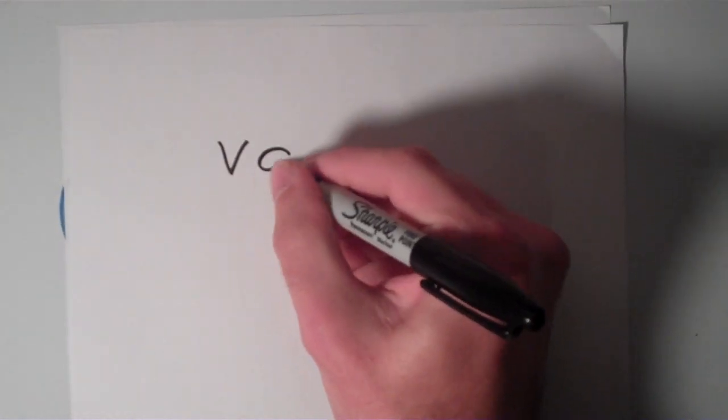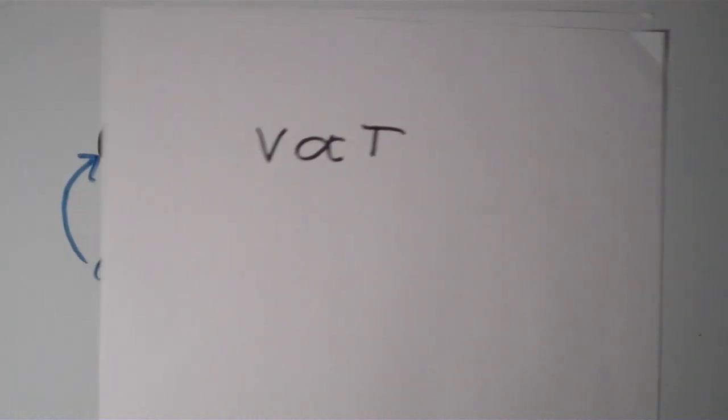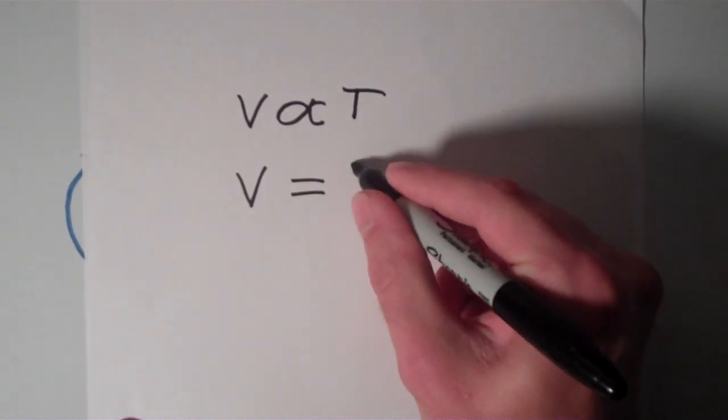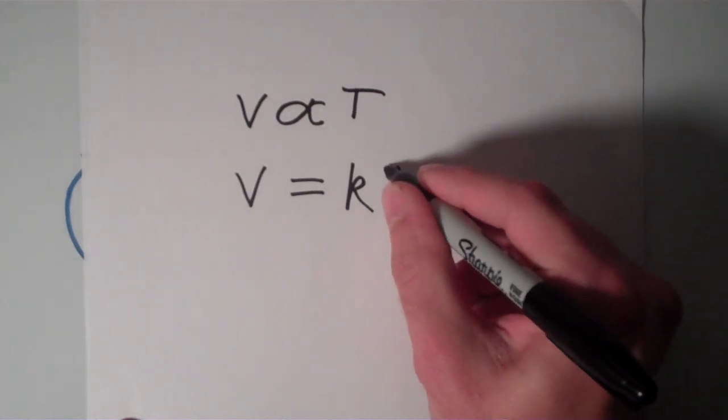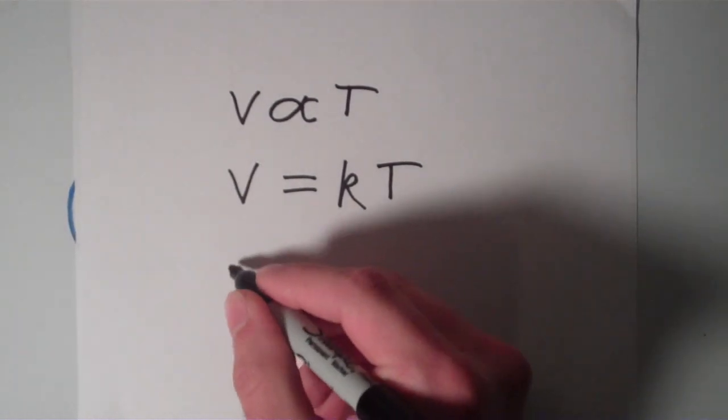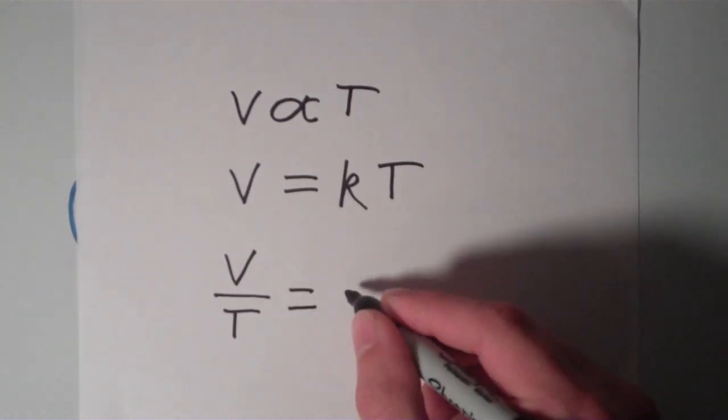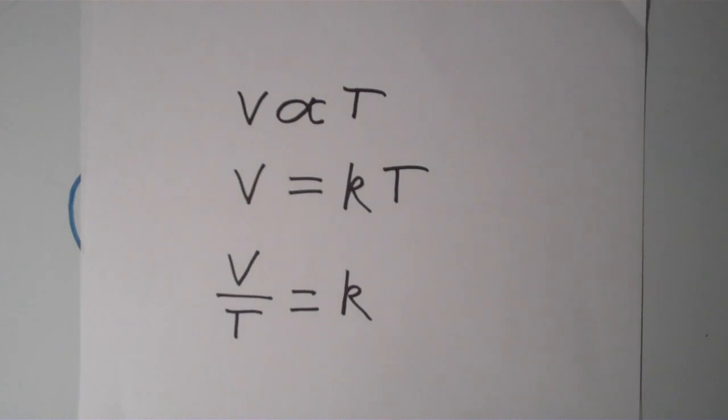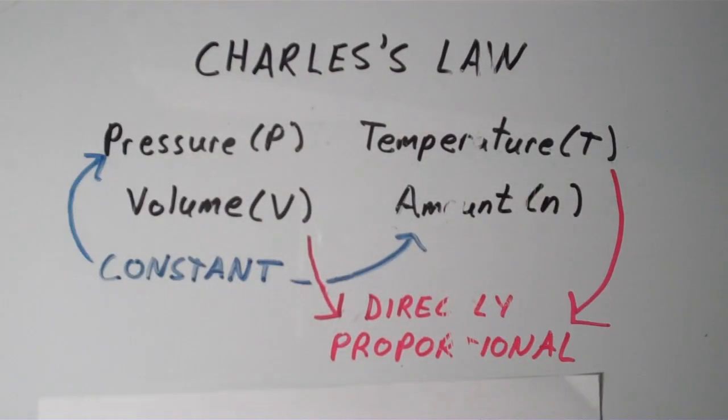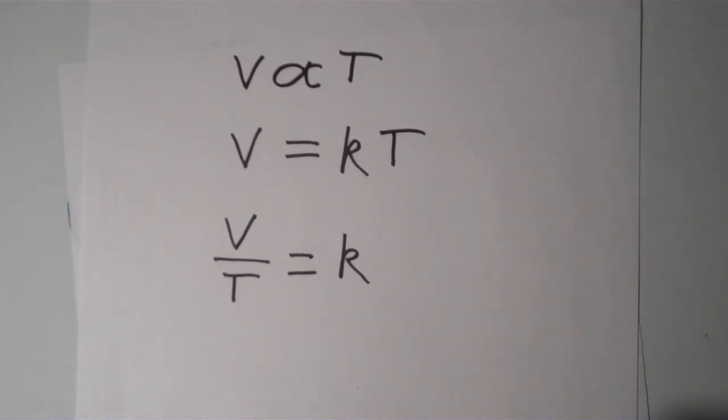So the volume, as I said, is directly proportional to the temperature. So that means that V is proportional to T. But I don't really like that proportionality symbol, so I'm going to turn this into an equation. And I'm going to say that the volume, V, is equal to some constant of proportionality that I'll just call K, times the temperature. And if we divide both sides by temperature, we'll end up getting the important result, which is V over T equals K, a constant. Remember, all of these conditions are satisfied when the pressure and the amount of the gas are constant.